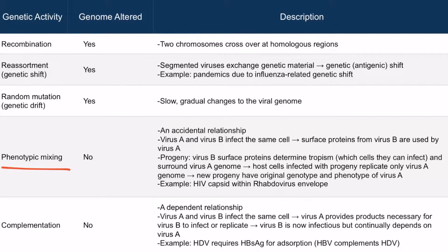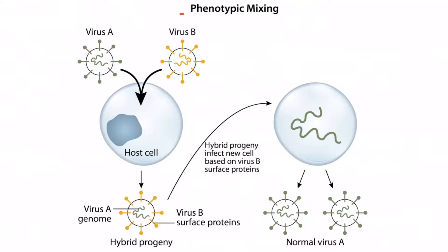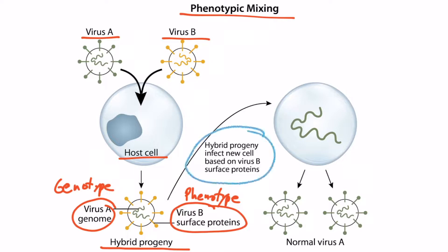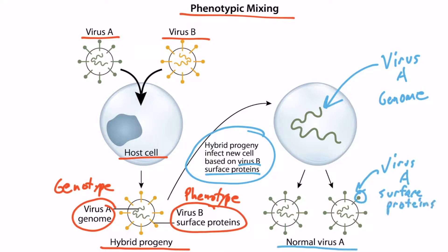Now let's talk about phenotypic mixing. With phenotypic mixing, the genome is not altered — it can be described as an accidental and temporary relationship. Virus A and virus B infect the same host cell and both replicate inside it. Their progeny can have genotypes and phenotypes mismatched. The hybrid progeny has the surface proteins of virus B — the phenotype — but the genome of virus A — the genotype. These hybrid progeny can then infect a new cell because of the virus B surface proteins. Once the virus A genome enters that cell, it replicates and the progeny look like normal virus A with virus A surface proteins. So the relationship between virus A and B was temporary and accidental.